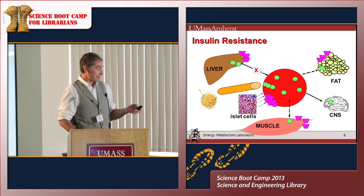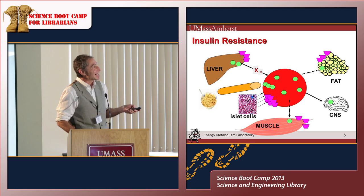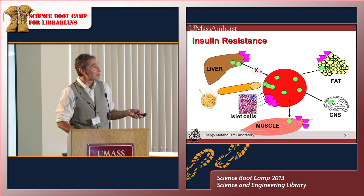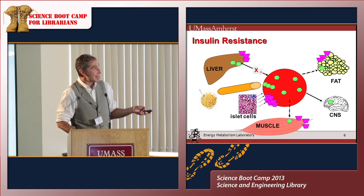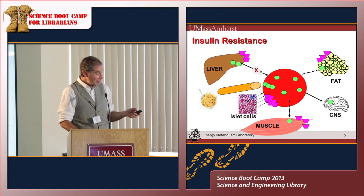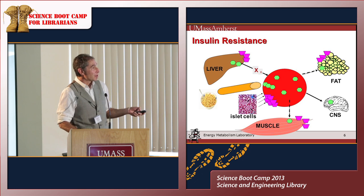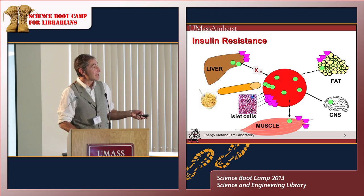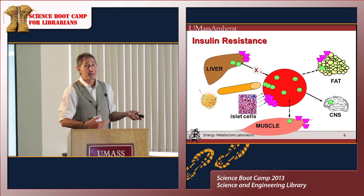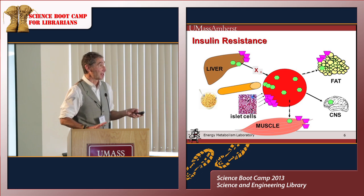This is the part where it gets fun. Here's the cartoon of insulin resistance. The red is the blood, the liver is the liver-shaped thing, the muscle is the striated balloon, the fat is here, the central nervous system looks like a brain, and this is your pancreatic islet cells. After you eat a meal, your blood sugar — represented by green hexagons because glucose begins with G, green — goes up.